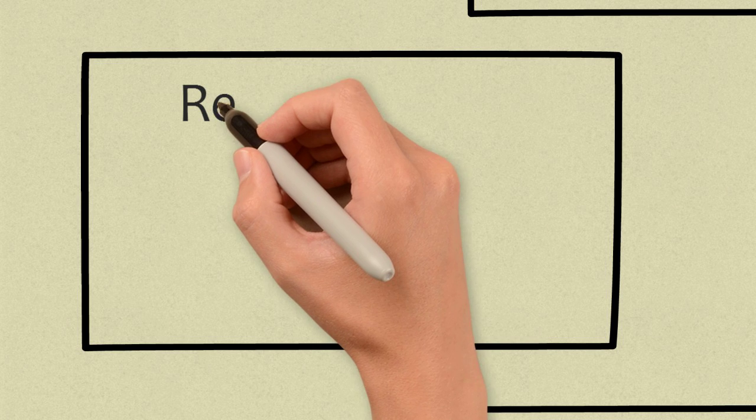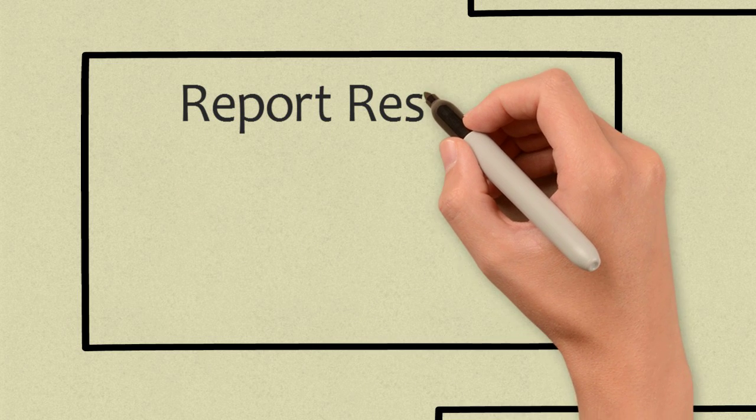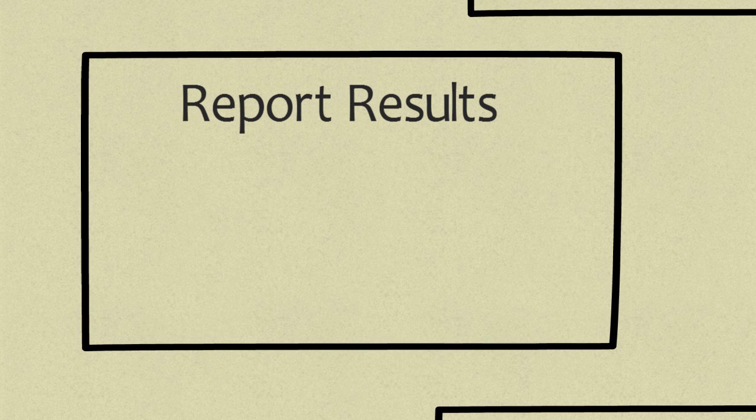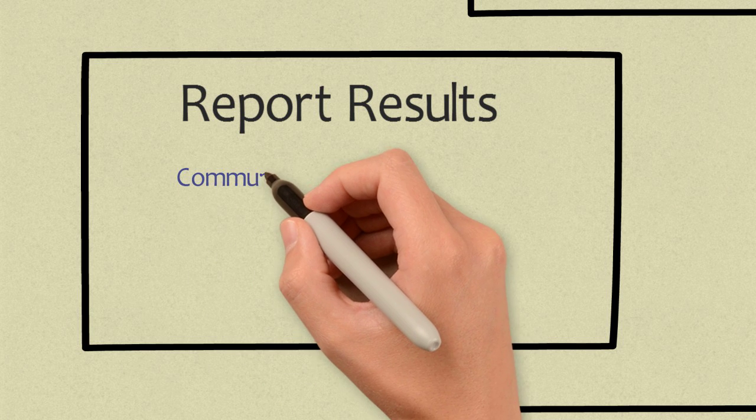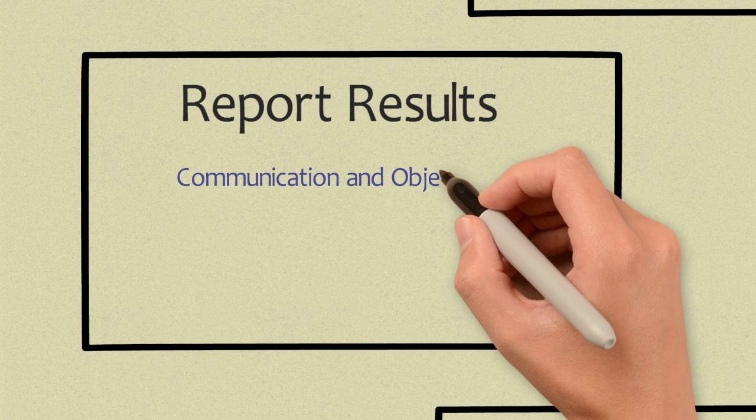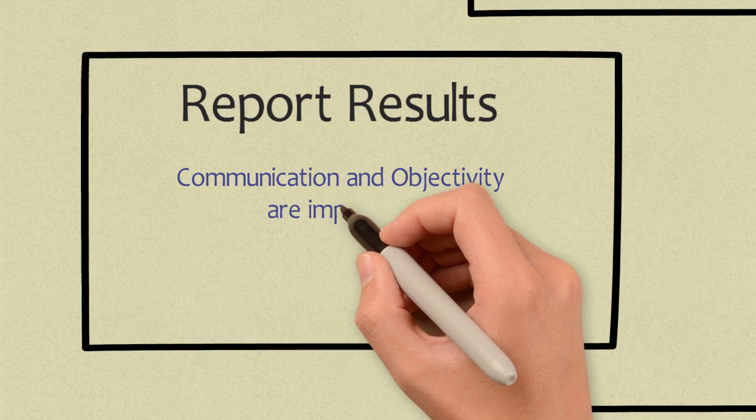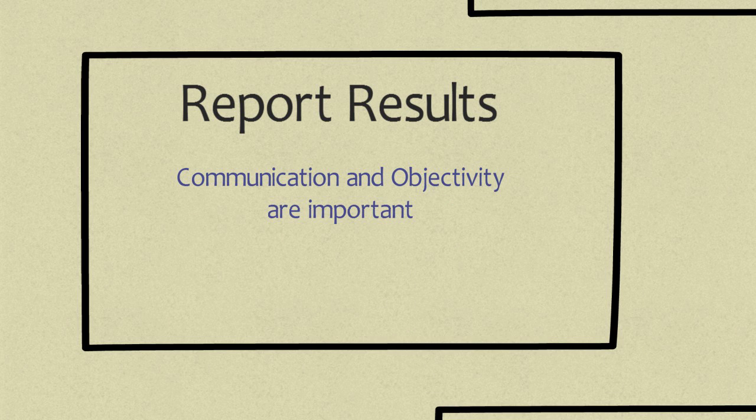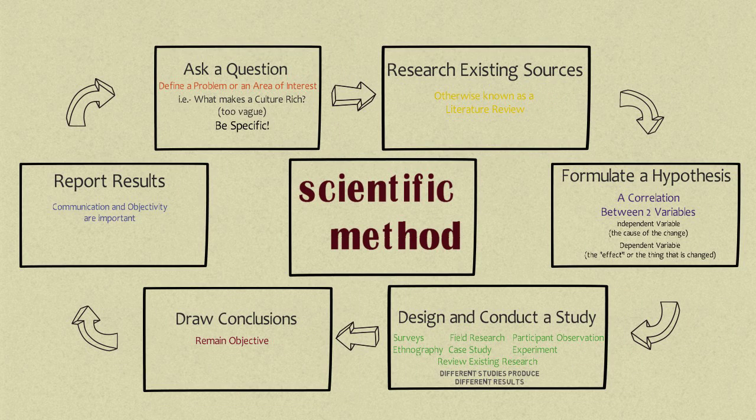Last, you report results. Reporting results adds to the body of research and creates an informed society. If the study was funded by outside sources, those sources need to be included in the information. Once again, ethics and objectivity are important as conclusions should not be biased by the group or organization that funded the study. By reporting results, researchers are held responsible for the methodology and findings.